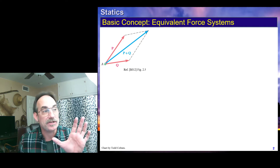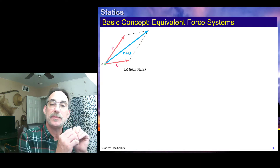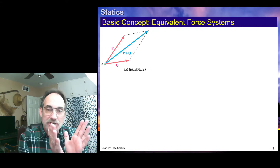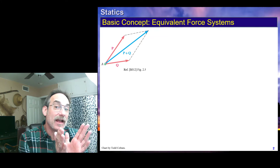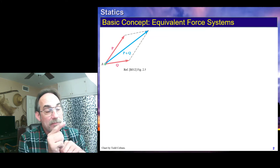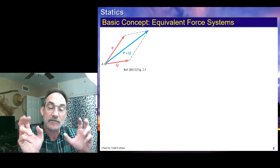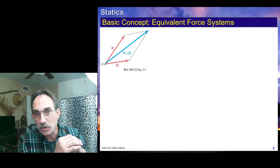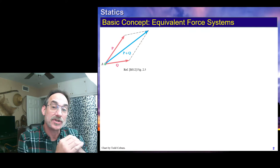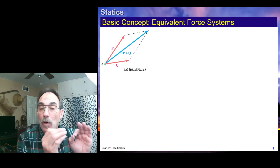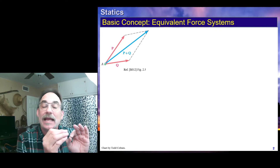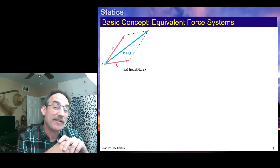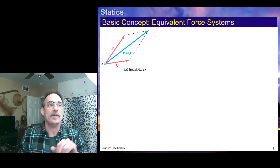We talked about components because those two components, P and Q, are parts of the vector which can be looked at as two separate vectors or as one combined vector. So P plus Q is the equivalent force system for the vectors P and Q. There is no moment since these forces are going through the same point — they are concurrent. Because of this, that equivalent force system has only forces, one force in this case, and no moments.